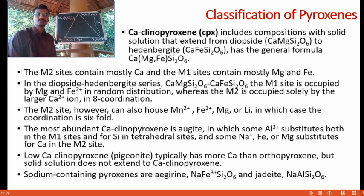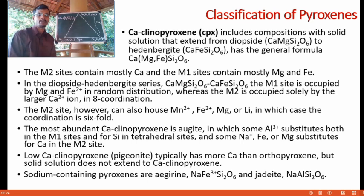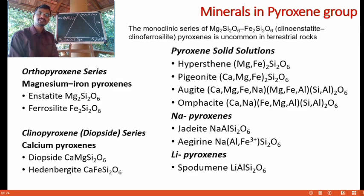Low-calcium clinopyroxene, also known as pigeonite, typically has more calcium than orthopyroxene but the solid solution does not extend to calcium clinopyroxene. There is a miscibility gap between the pigeonite series and subcalcic or calcic clinopyroxene. Sodium-containing pyroxenes are known as aegirine, having a composition NaFe3+Si2O6, and jadeite, having a composition NaAlSi2O6. Pyroxenes are thus classified into two series: the orthopyroxene series and the clinopyroxene series.